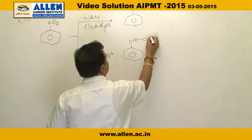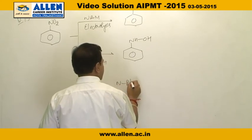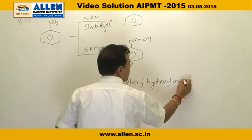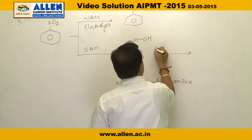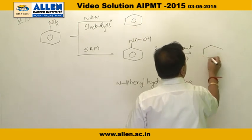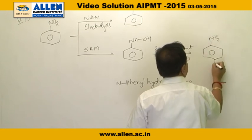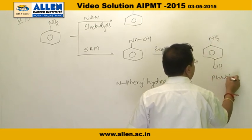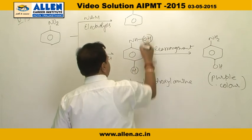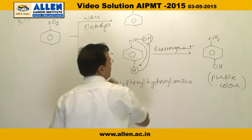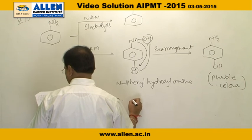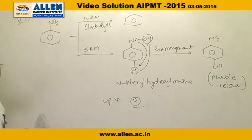The intermediate product formed is N-phenylhydroxylamine, which finally rearranges to give para-aminophenol — a purple color compound. So the final answer is option number 4, para-aminophenol, in strong acidic medium.